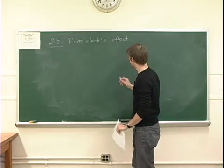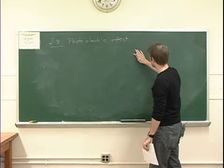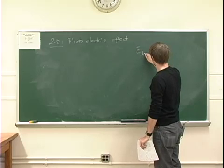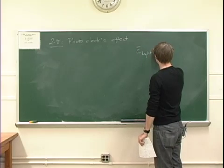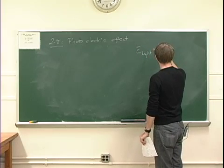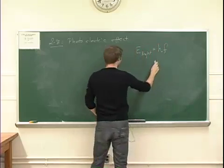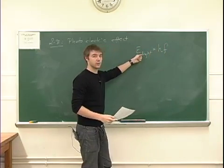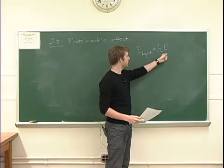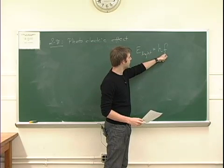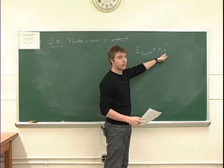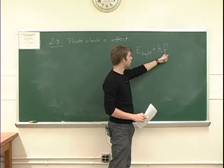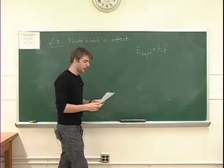One of the predictions of quantum mechanics is that the energy stored in light is Planck's constant h times the frequency f of that light. As the frequency increases, the energy in the light increases. So knowing this formula, it's not surprising that red light, which has a low frequency, may not be able to excite electrons, whereas blue light, which has a large frequency, may in fact be able to do that.